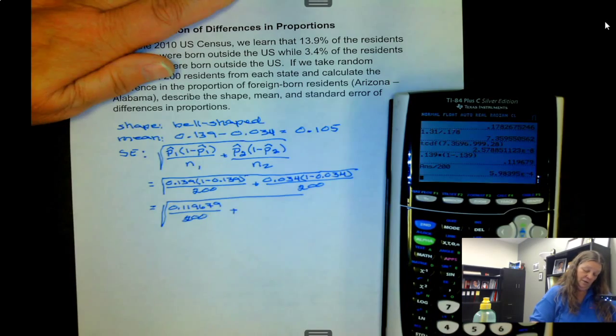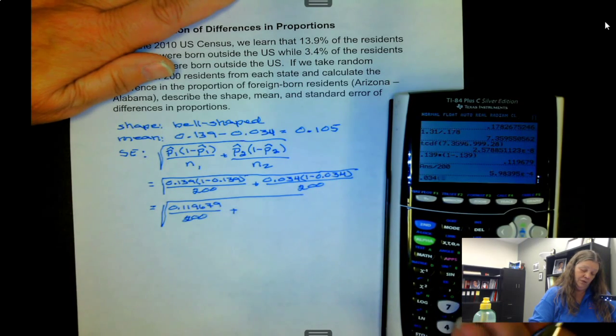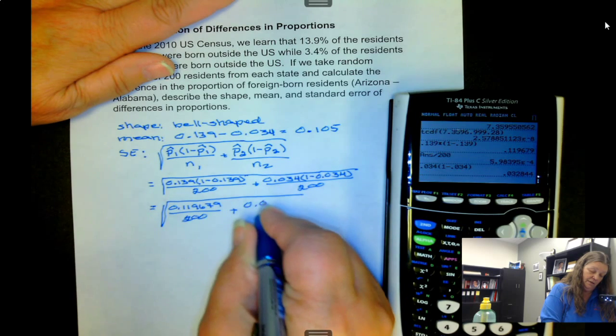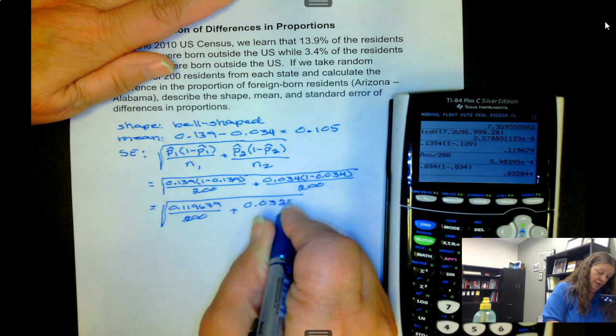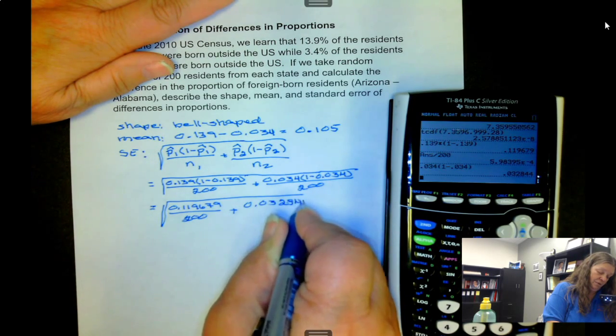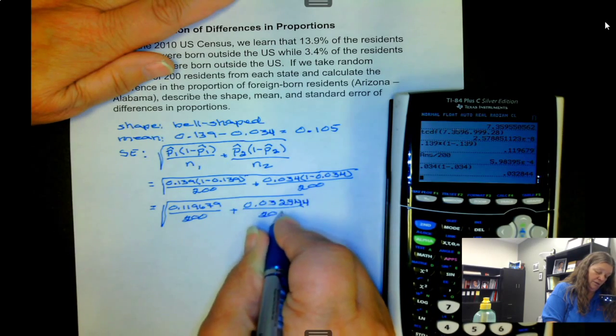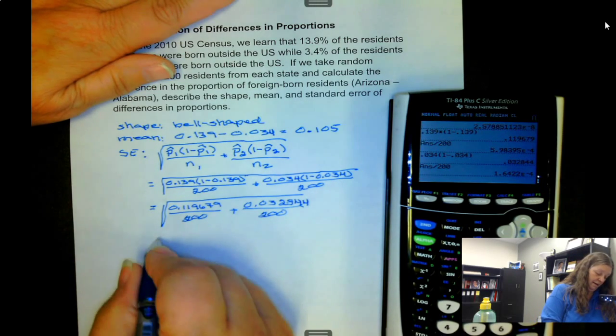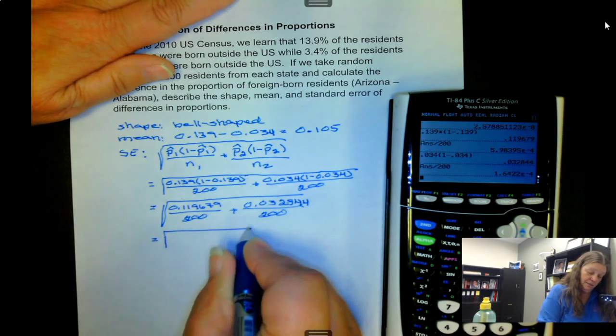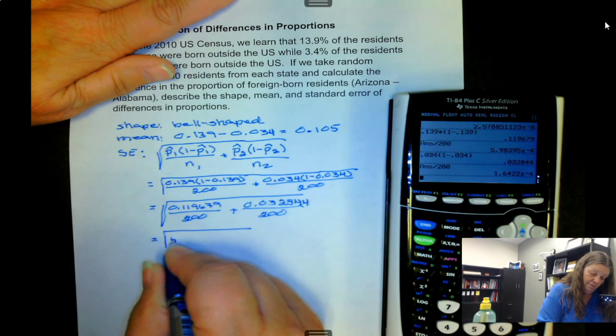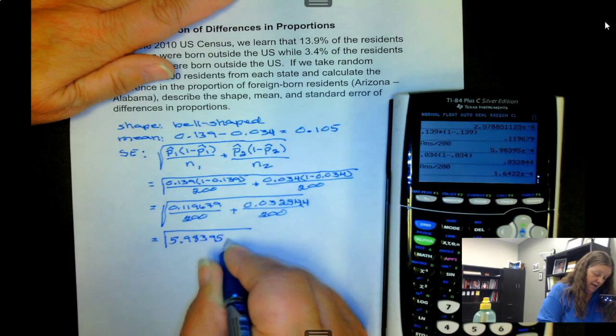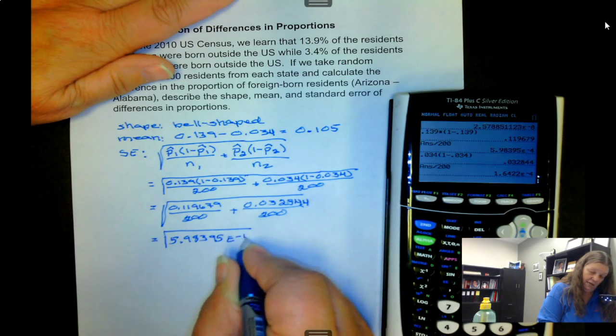Then we have 0.034 times 1 minus 0.034 gives us 0.032844 over 200. We have the square root of 5.98395e-4 plus 1.6422e-4.